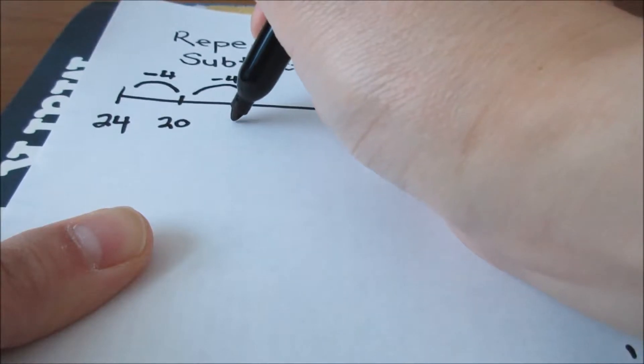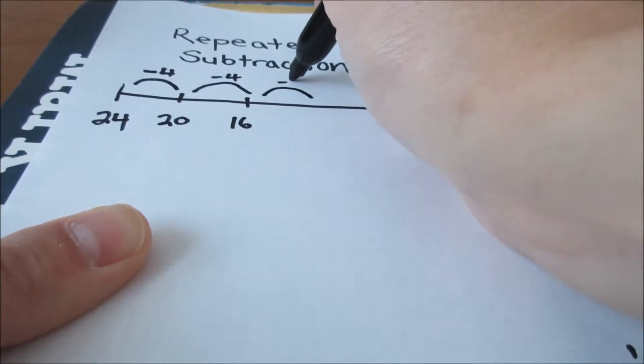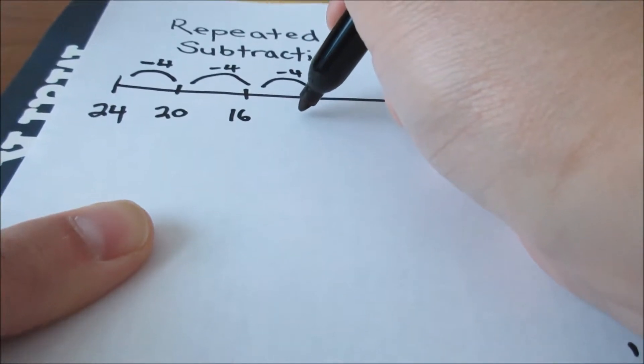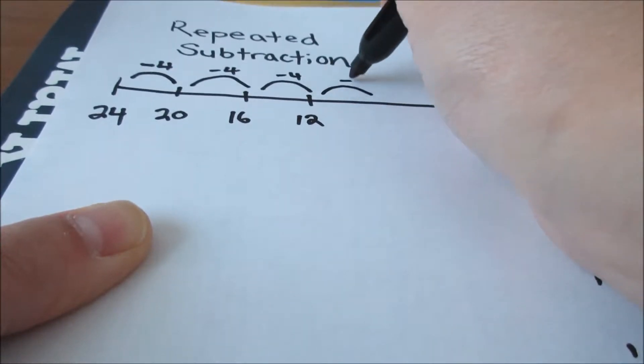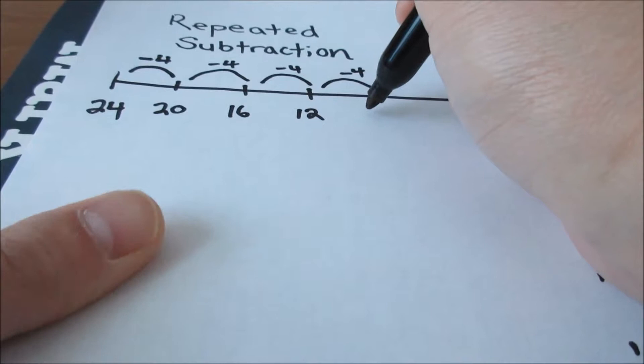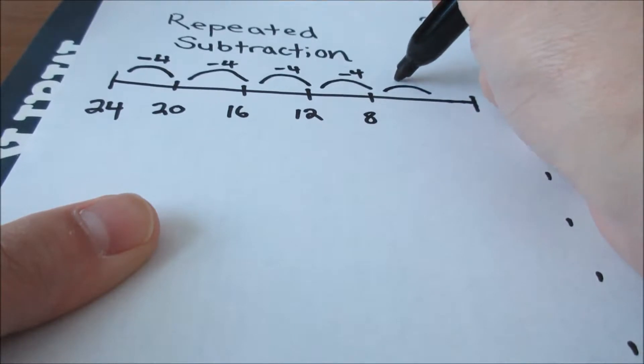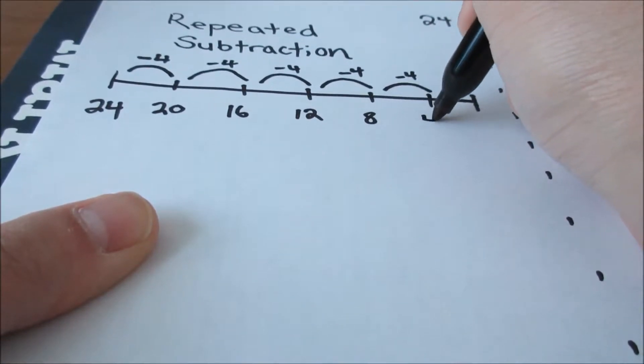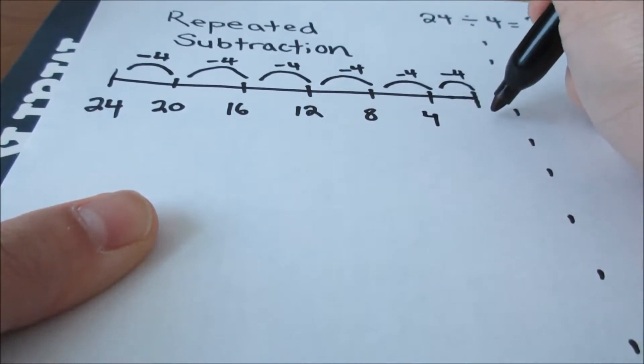That's the second time I've taken 4 away. That's the third time. If I take 4 away again, that's going to leave me with 8. If I take 4 away again, that's going to leave me with 4. And if I take 4 away again, I'm going to come with 0.